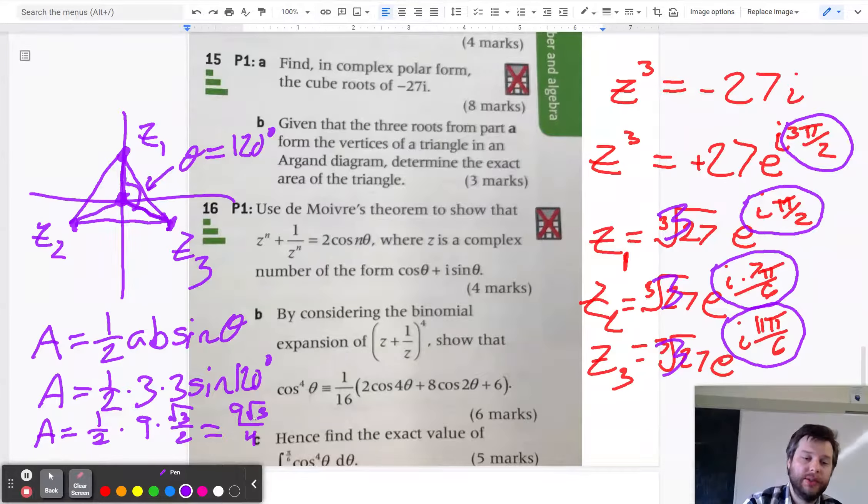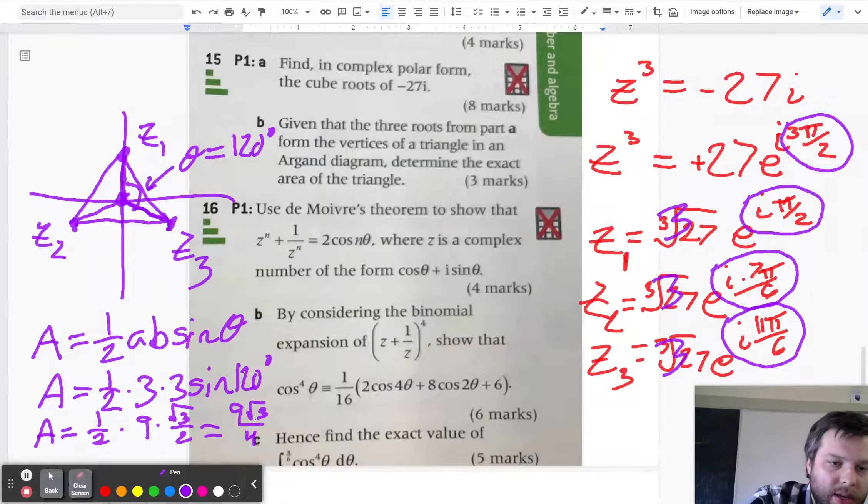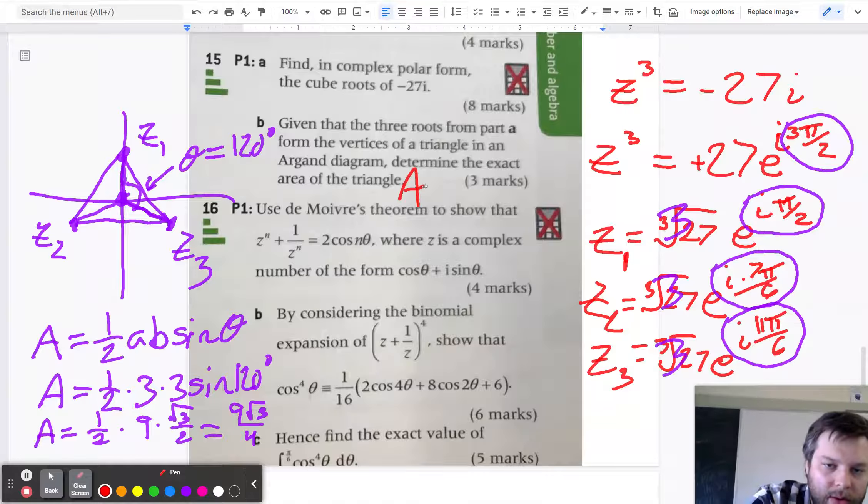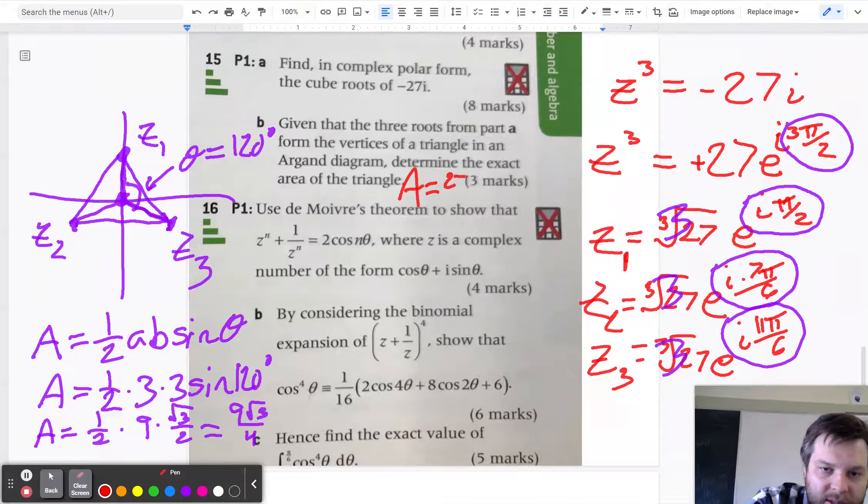And that's only one of the triangles. And so if you just multiply that by 3, you get the total area. So the total area would be 27 root 3 over 4.